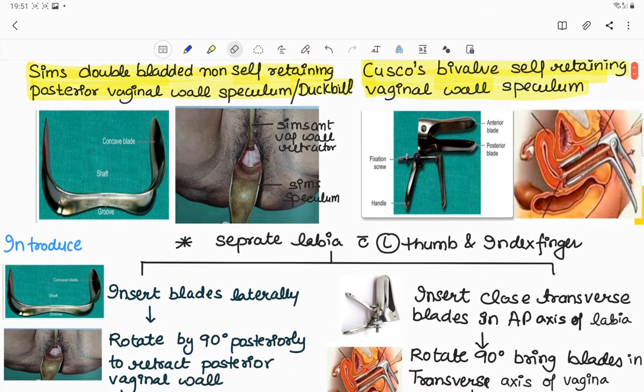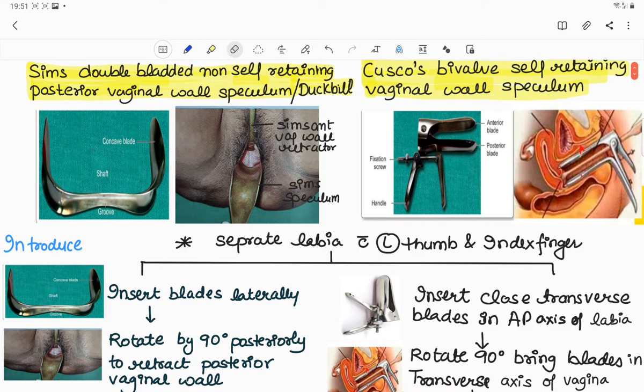Our first instrument is SIMS double-bladed self-retaining posterior vaginal wall speculum, also called duckbill speculum. It consists of two blades of different sizes and one shaft containing a groove. The groove is for drainage of any type of secretion or liquor.